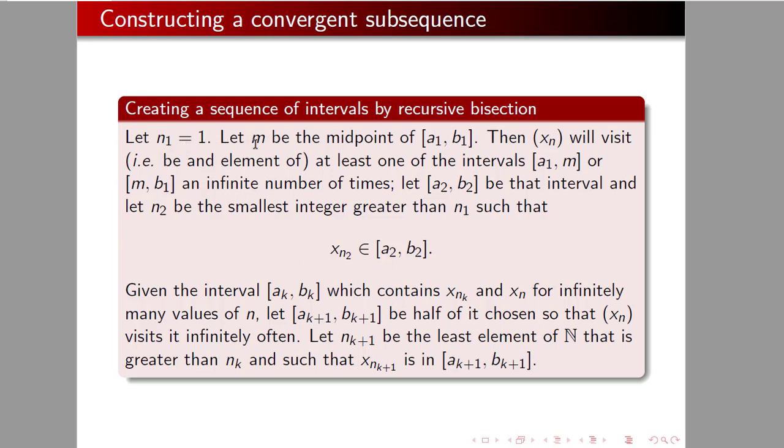Let n sub 1 equal 1 and let m be the midpoint of a1, b1. Then the original sequence, x n, will visit at least one of the intervals, a1 to m or m to b1, an infinite number of times. It might, in fact, visit both of them an infinite number of times. It might bop back and forth, but it will visit at least one of them an infinite number of times.